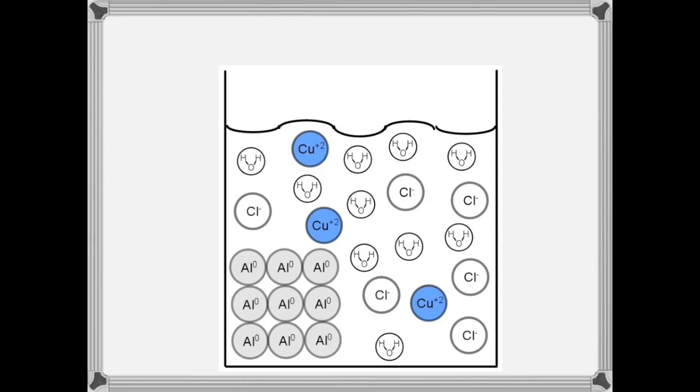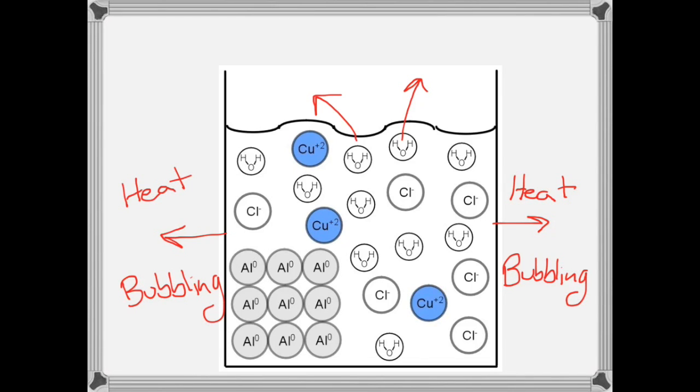As soon as you add the aluminum, you're going to feel a lot of heat being emitted from the beaker and you're going to see a lot of bubbling as well. Are the bubbles steam or are they a different gas? Only further experimentation could tell. So we'll classify this reaction as exothermic.